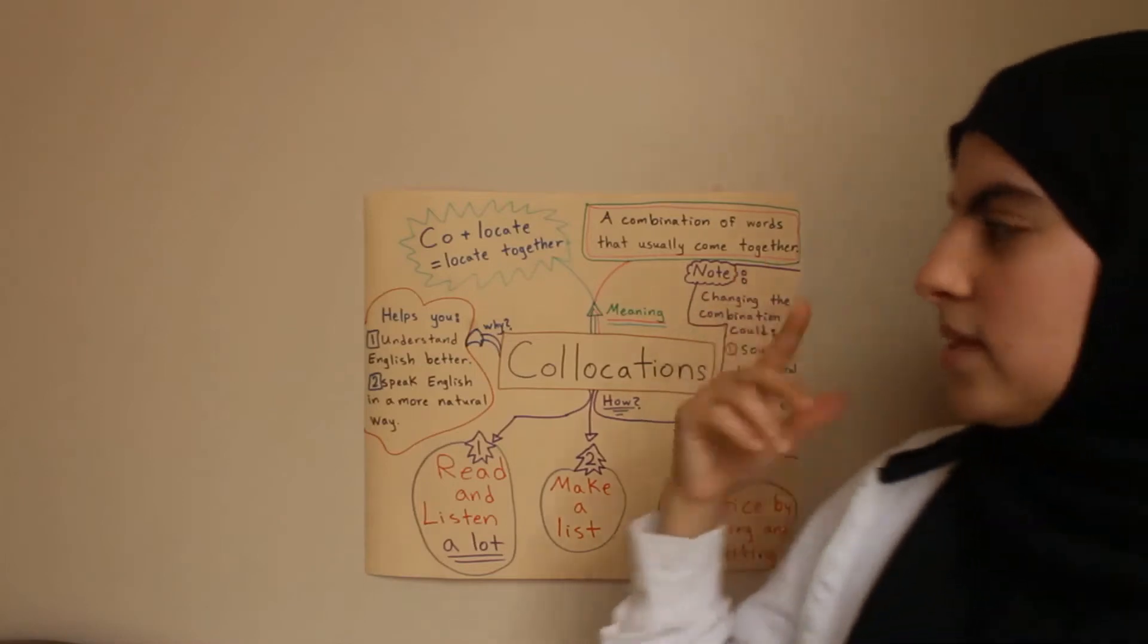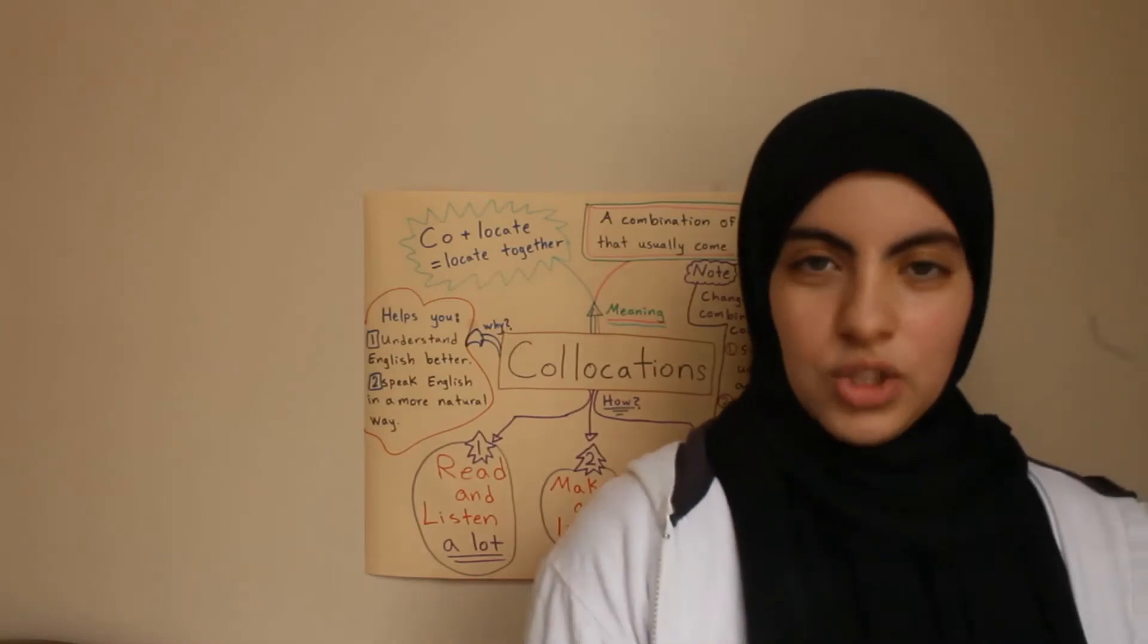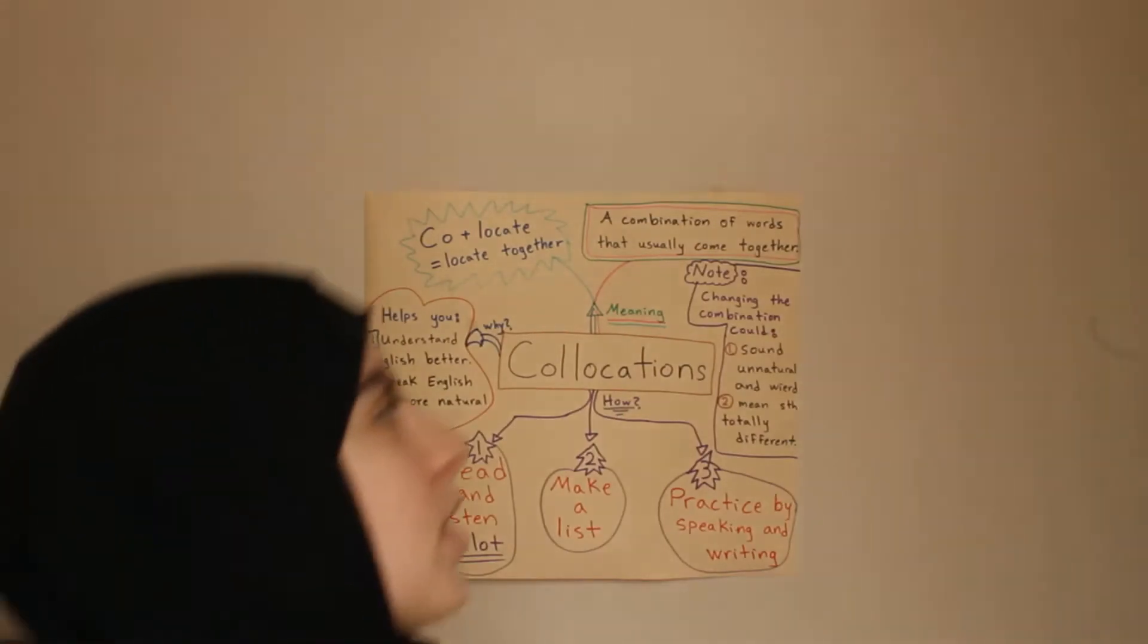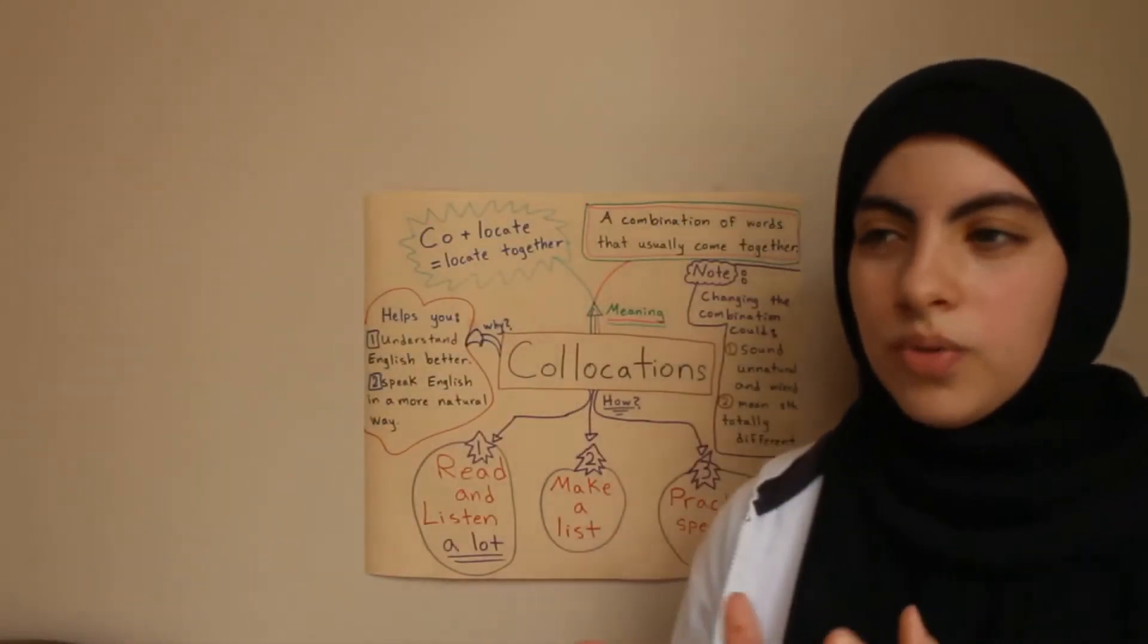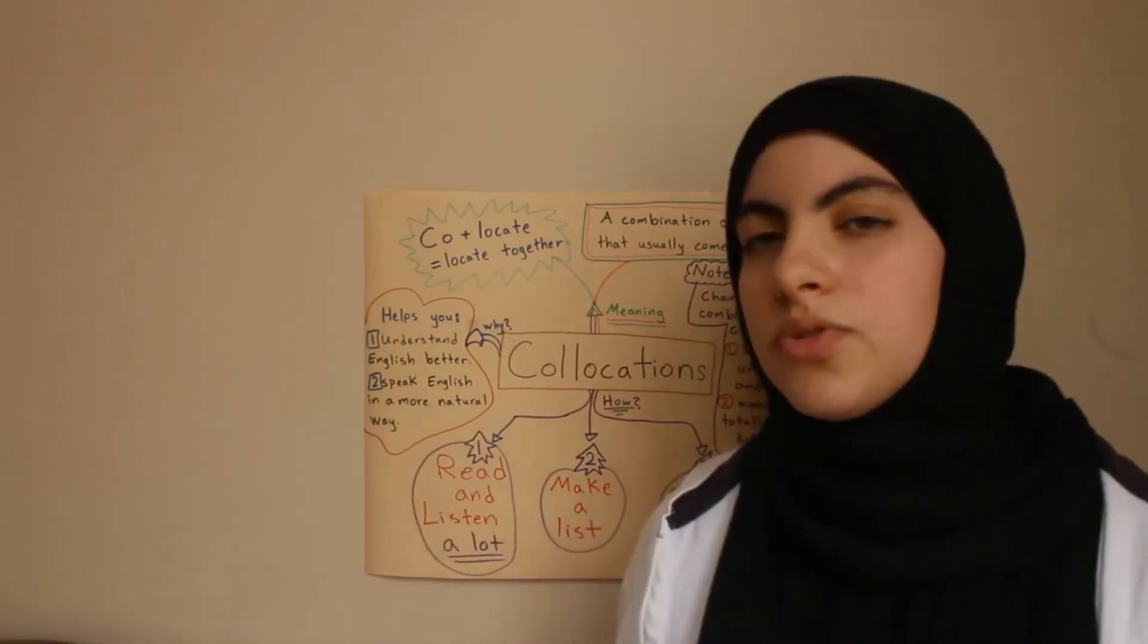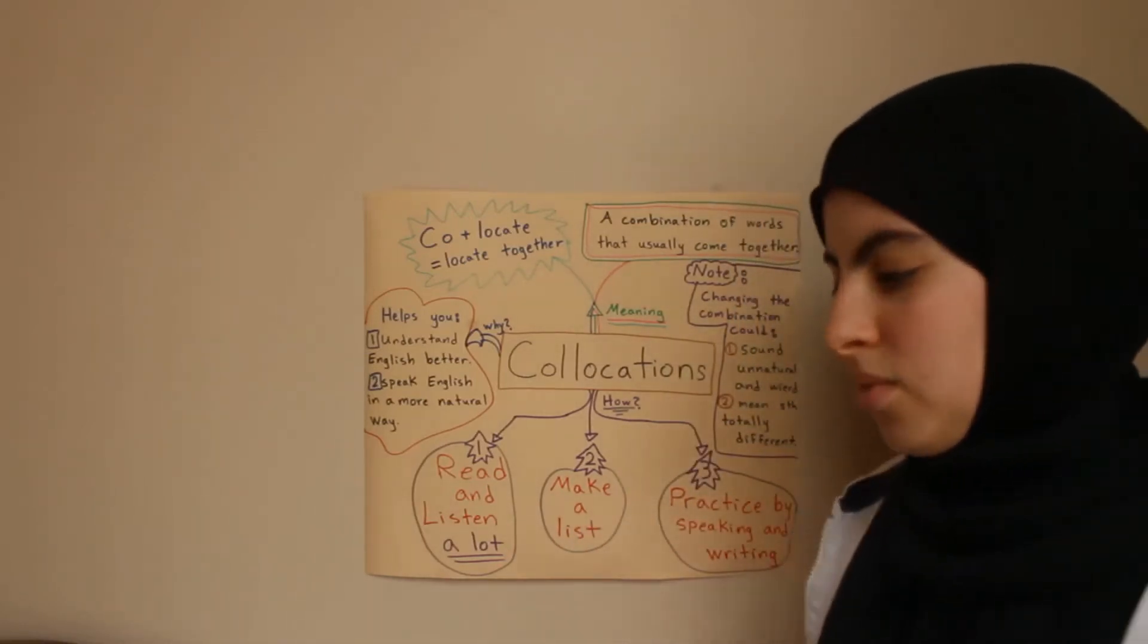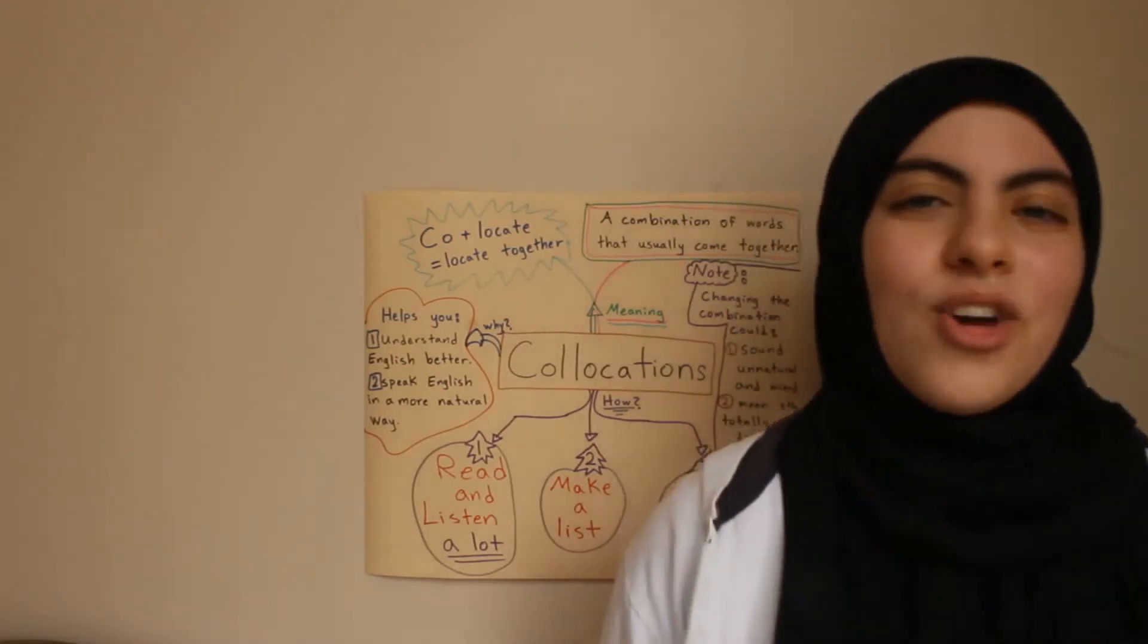So what happens if I change the collocation? Let me just give you an example. A correct collocation would be have a seat or take a seat, which means sit down. But, if I change the collocation and put make a seat, it's no longer a collocation and it's going to mean something completely different. Make a seat, build me a seat. Create a seat. Build me a seat! You want me to build you a seat? No! Just sit down!